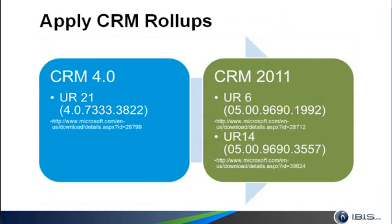Outside of customizations, your stock CRM system also has to be at a current supported roll-up for upgrade. If you're coming directly from CRM 2011 to 2013, you need to be at least at Update Rollup 14 before it'll upgrade. If you're coming from CRM 4.0, you need to be on the latest update roll-up, which is 21, and then you can hop through CRM 2011 on Update Rollup 6 — so you don't need to go to 14 if you're just doing a hop-through. I'll explain a little more about that later.